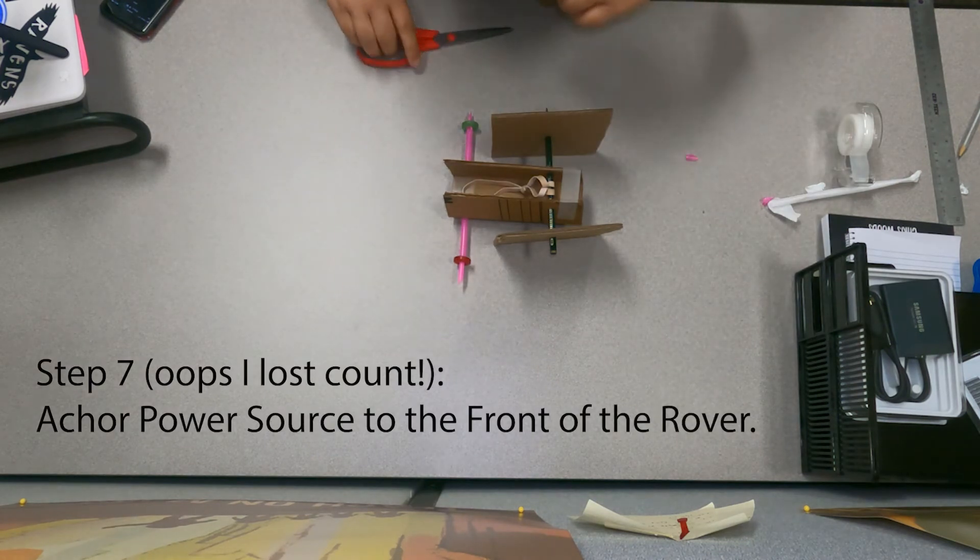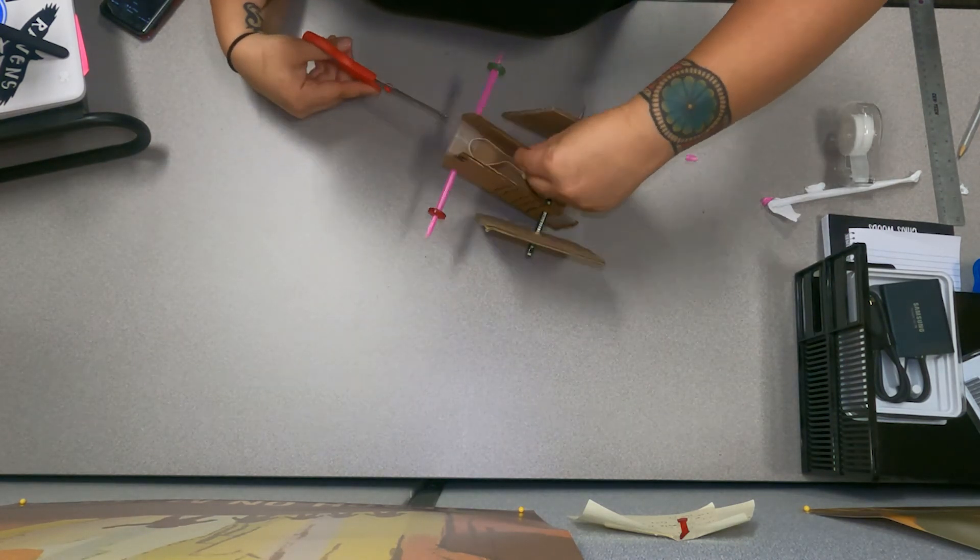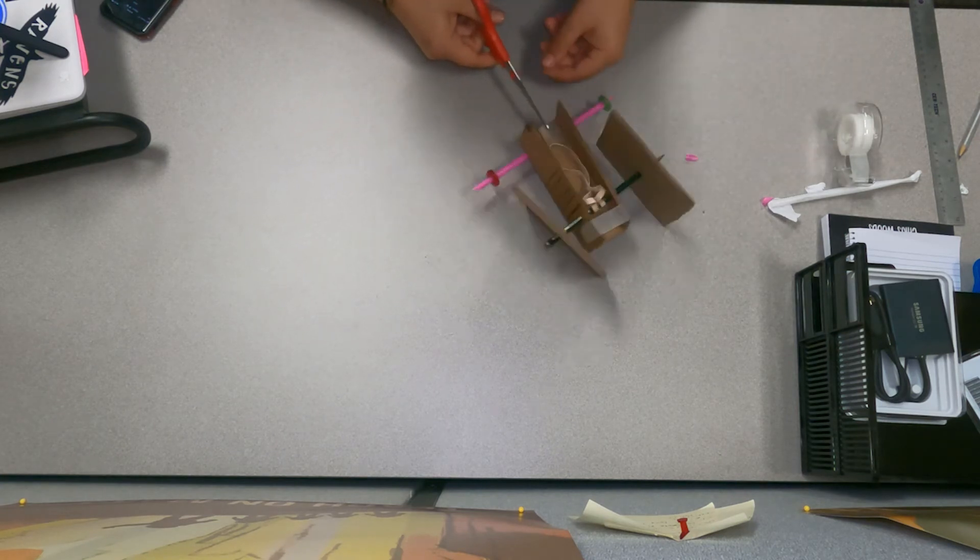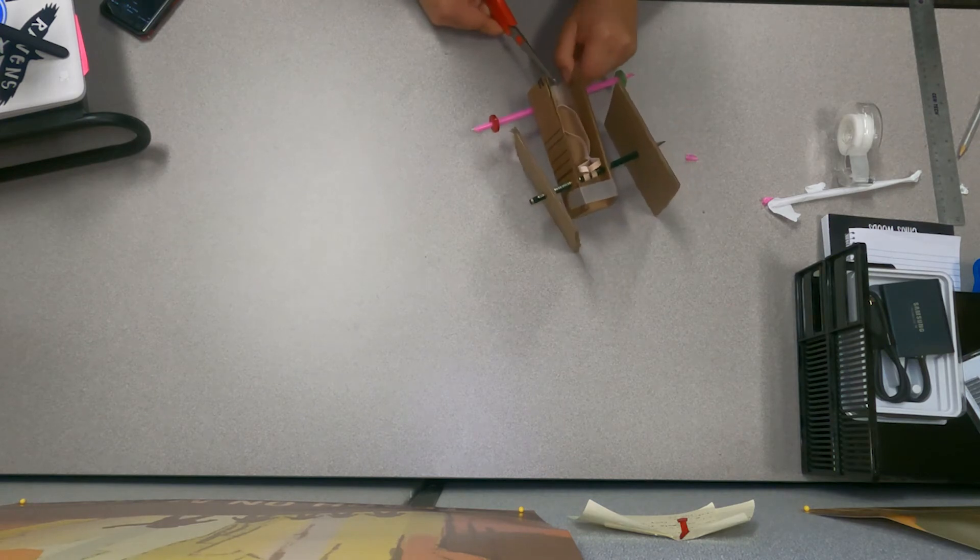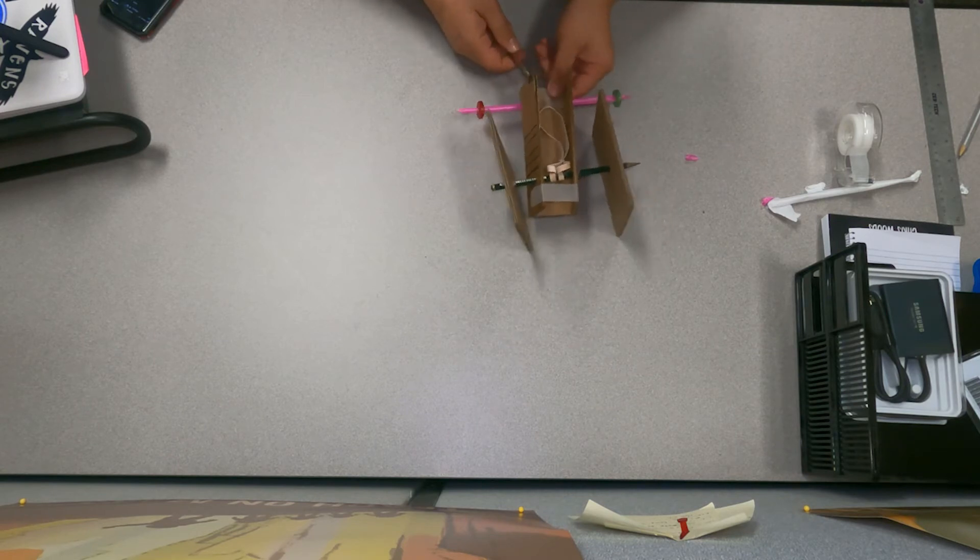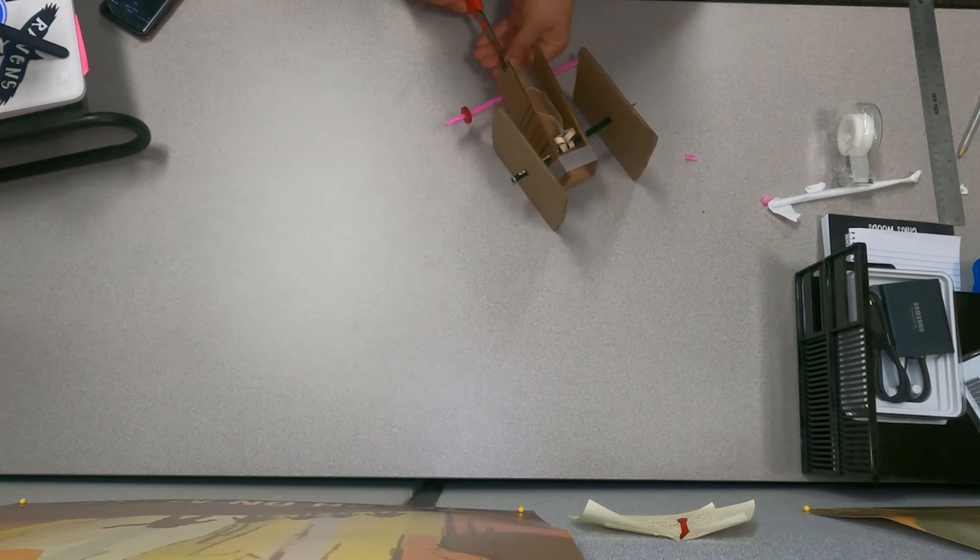We're going to go into step seven but it's really step six, I just lost count. We're going to take our scissors, we're going to cut two little notches out of the front. The goal is to anchor the power source to the front of the rover so it'll create tension.